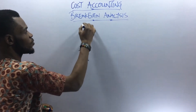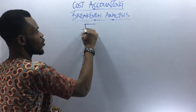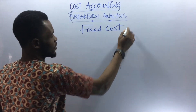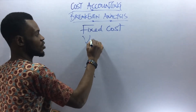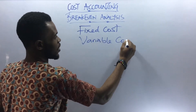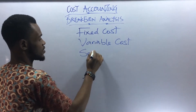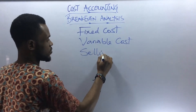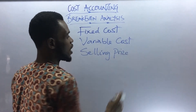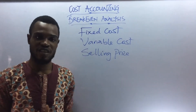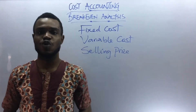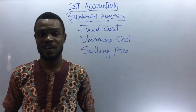First of all, you need to be aware of what we call the fixed costs. Then, we'll have the variable costs. And we'll have the selling price. Once you are able to identify these three things in any question that has been asked, you are good to go under the break-even analysis.